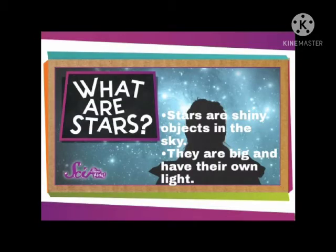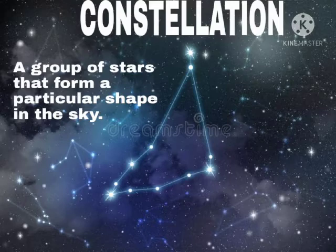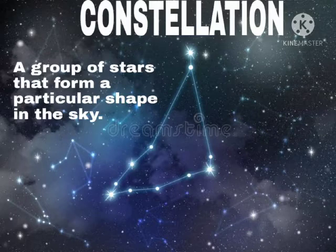Now, what are stars? Let us study about it. Stars are the shiny objects in the sky. They are very big and have their own light. A group of stars that form a particular shape in the sky is known as a constellation. Children, can you see this shape of a triangle which is formed by joining the different stars? This is called the constellation.